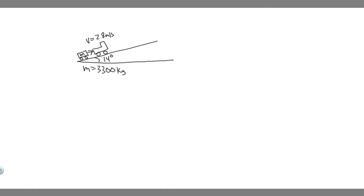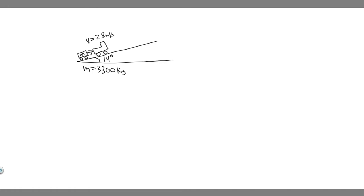The first thing you always want to do is draw what's going on. So we have this trailer — it's going to be pulled by this tractor, and we know it's going to be up a 14 degree incline. The velocity of the tractor is going to be 2.8 meters per second, and the mass of the trailer is 3,300 kilograms.